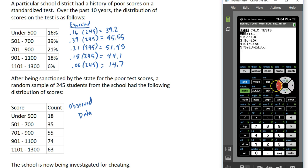I'm going to go to stat, edit the lists. I still have my data from the last example, so I'm going to clear that out. I'm going to put the observed counts in list one. These are the counts I got from my random sample of 245 students.